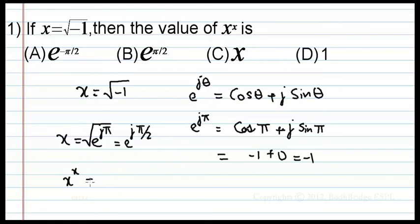Now x power x is asked, which implies j power j, where j is square root of minus 1. Therefore replacing this x as e power j pi by 2.